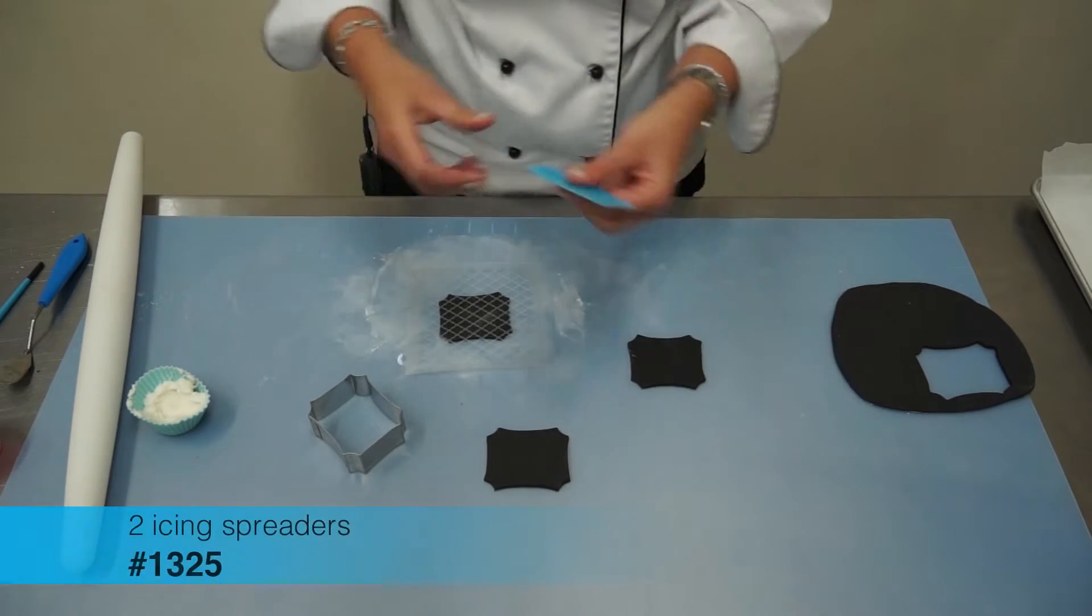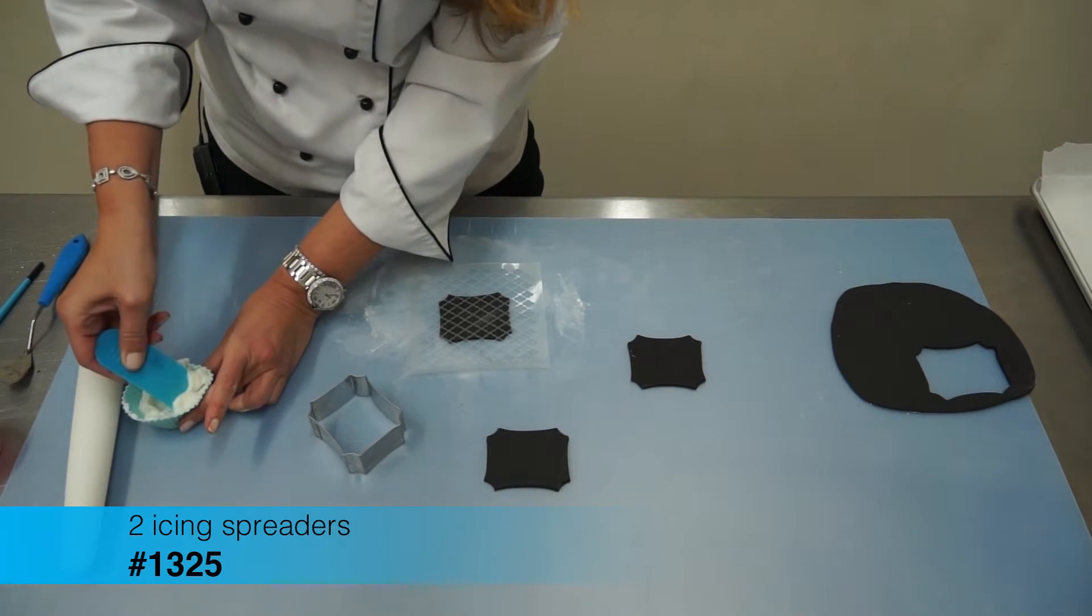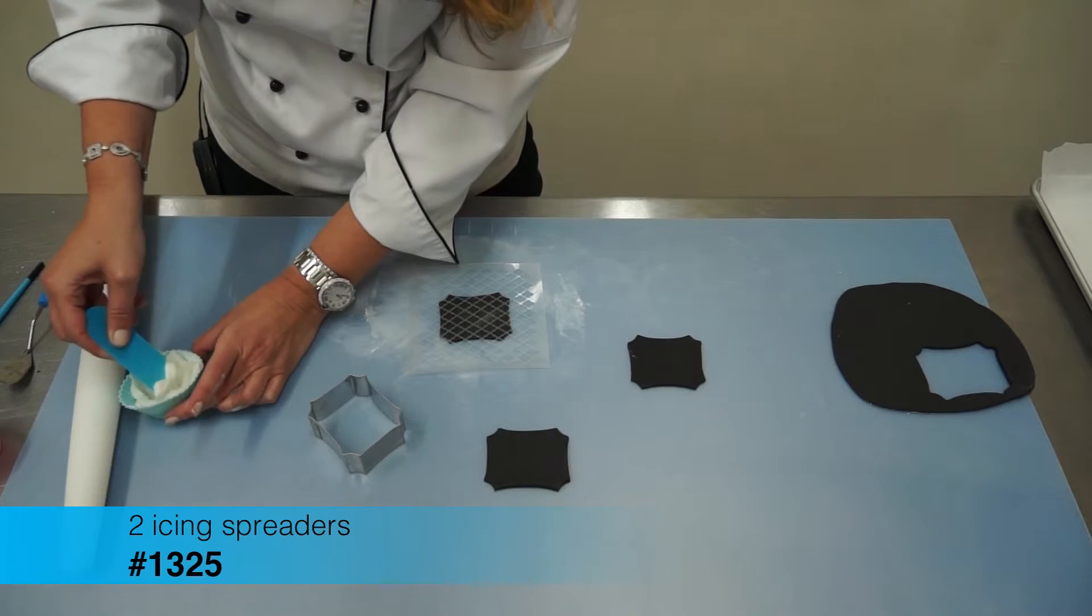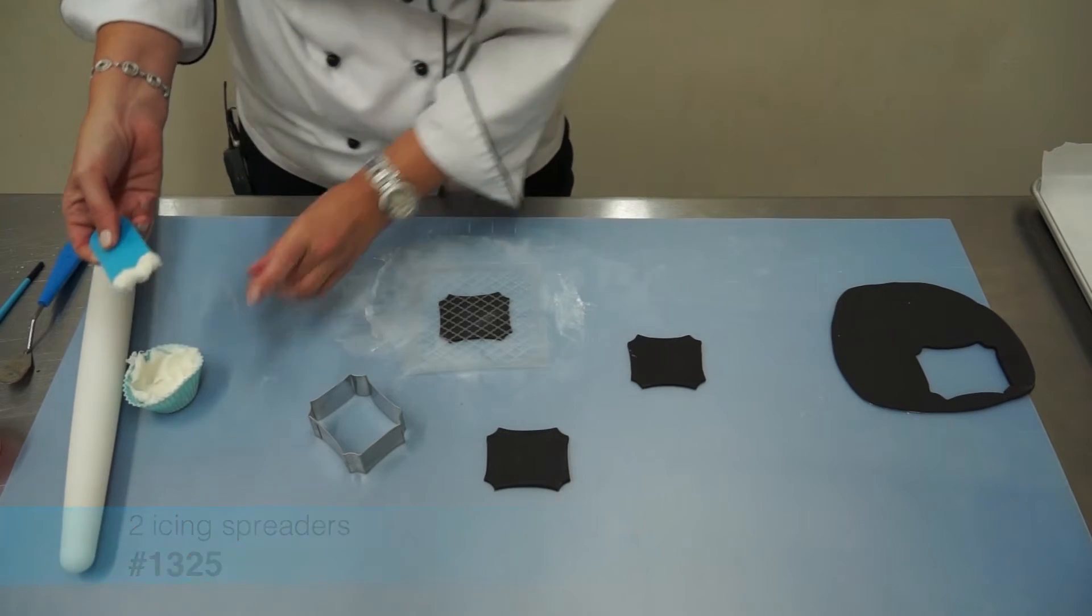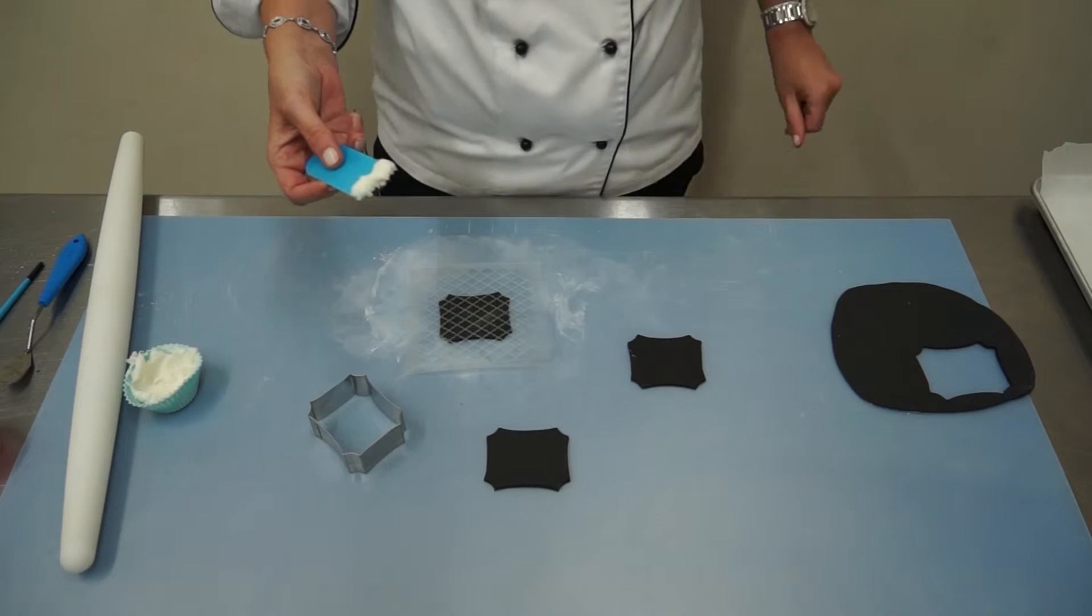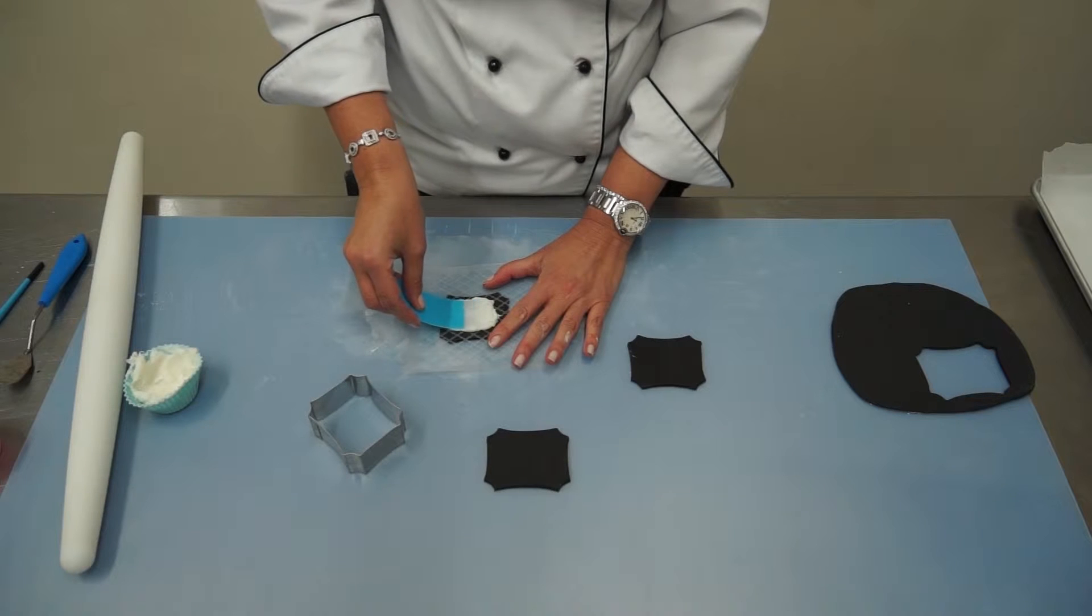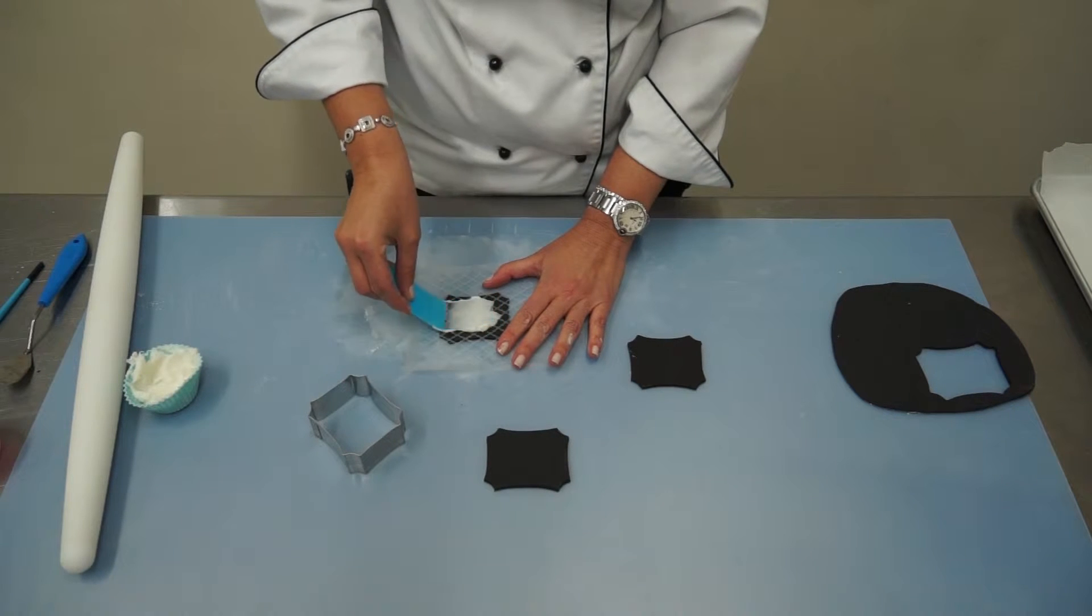Then I'm going to take this icing scraper and take a little bit of icing. Now you can use royal icing, you could use buttercream, it doesn't really matter, whatever you prefer. The only difference is royal icing will dry harder and this will stay soft. Then you're just going to literally spread it onto your cookie or fondant.